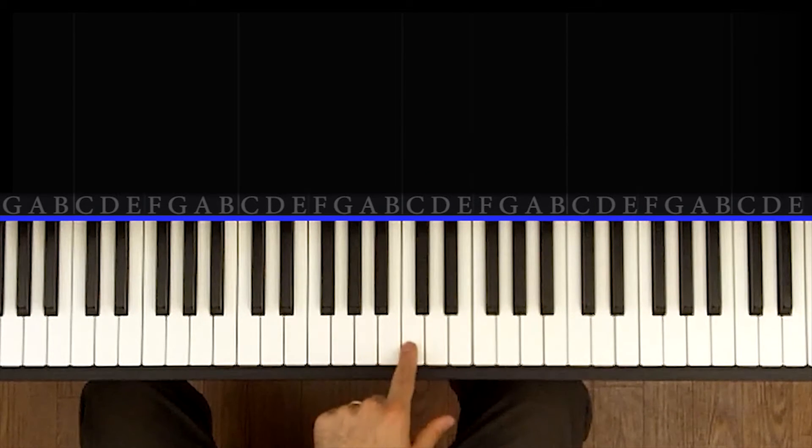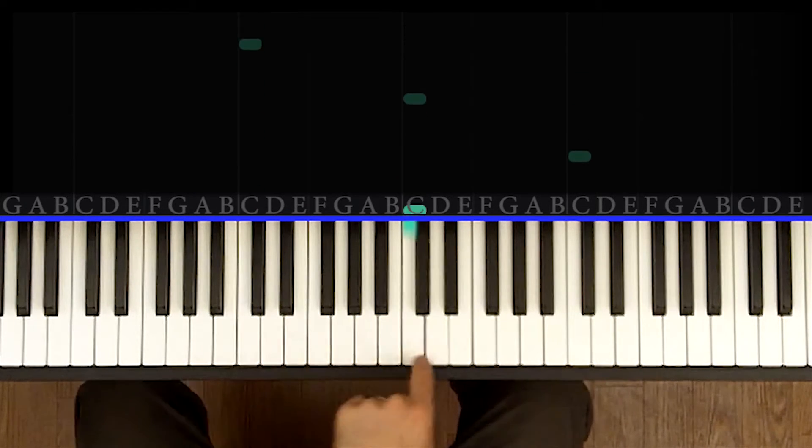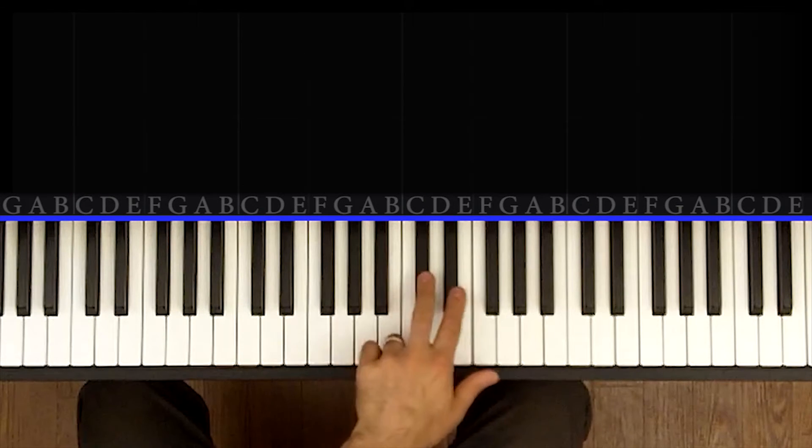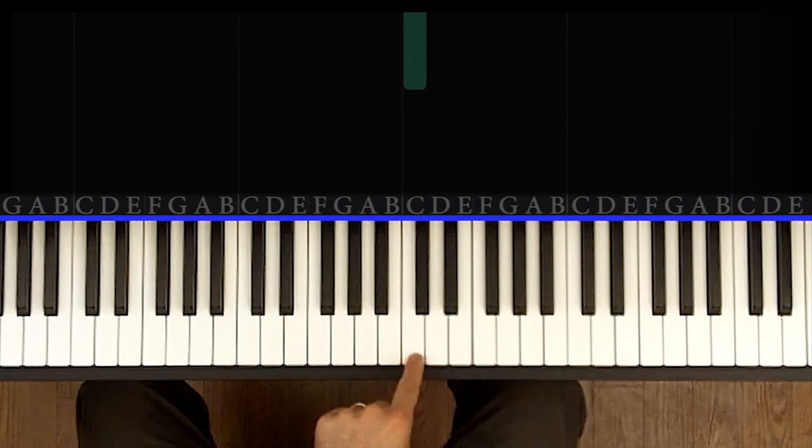Same is true with the C. It's the note that's just to the left of the two black notes. So you want to find all the C's on your keyboard as fast as you can. I'll let you find them. But you want to quickly look, find a group of two, and then the white note that's just to the left of that is your C.